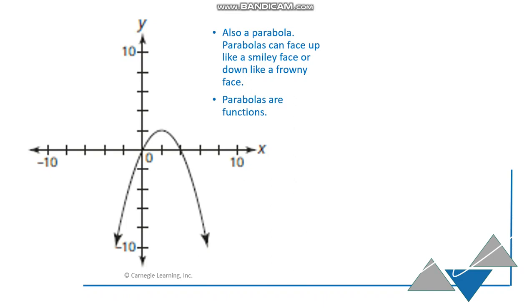This next graph is also a parabola. Parabolas can face up like a smiley face or down like a frowny face. And parabolas are functions all the time. Look for a vertical line test. You'll see you can't draw a vertical line and hit this function more than once. It's continuous. There is one y-intercept at 0, 0. We call that the origin. Two x-intercepts. One at 0, 0. One at 4, 0.